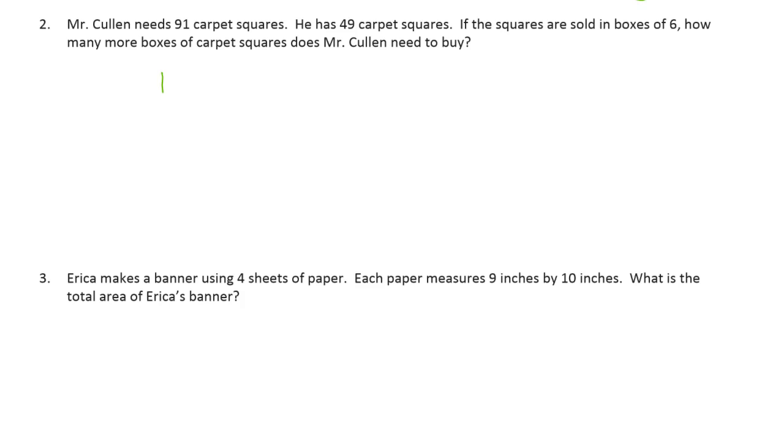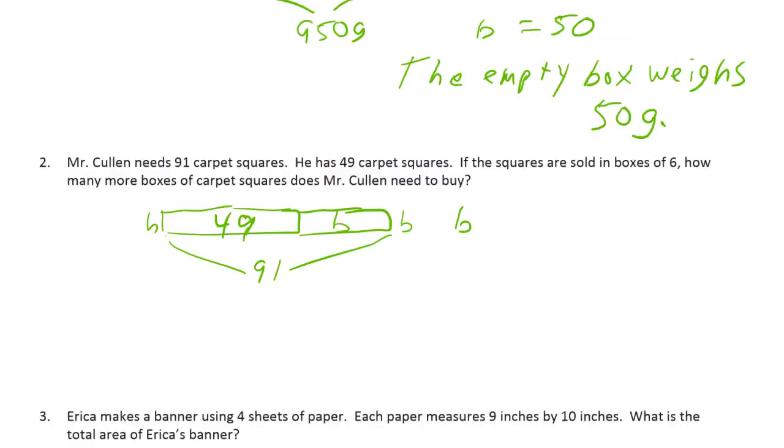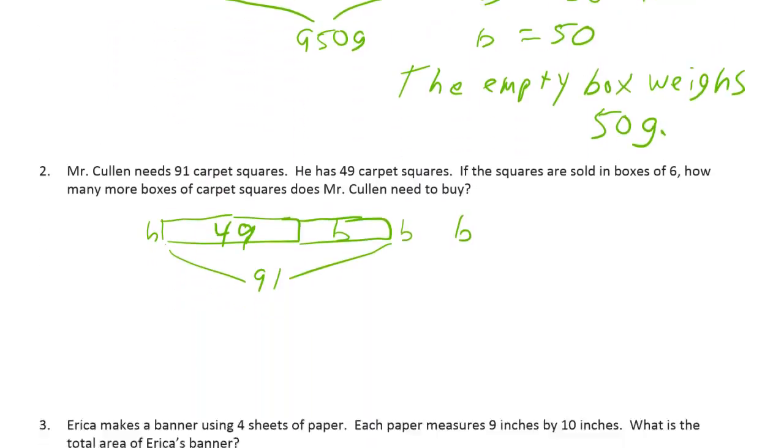We have to figure out what he needs first, which is going to be pretty easy. Let's see. He needs, here's the 91 he needs. He has, this is what he has, right? He has 49. And that's what he needs. This is what he has, right? And this is what he has to buy, B. Just put that right in there, B. And 91 is what he needs for whatever he's using the carpet squares for. So, let's see. Use a letter to represent the unknown. So we still have to do that.